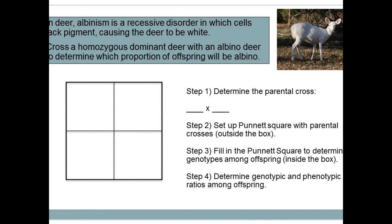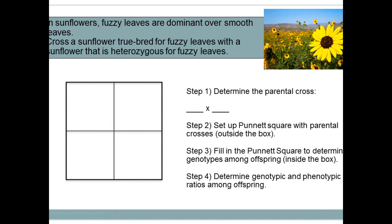Filling in the Punnett square: your four offspring combinations are TT, Tt, TT, and Tt. Step four — determine your ratios. Genotype ratio: 50% are homozygous dominant (TT) and 50% are heterozygous (Tt). Phenotype: since dominant always masks recessive, 100% of the offspring will be round. That's all there is to it — simple!